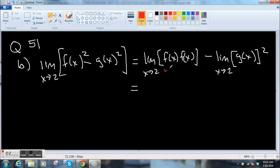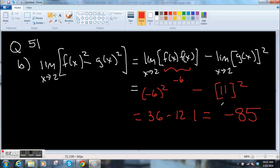We just said the limit of f of x, that was negative 6. So this part is negative 6 squared minus, and the g of x, the limit of g of x was 11. So that's 11 squared. Calculator, help me. So that's 36 minus 121 equals negative 85. So that whole limit is negative 85.